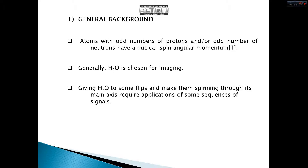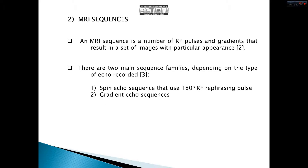Let's talk about the theory behind MRI. Atoms with odd numbers of protons and odd numbers of neutrons have a nuclear spin of angular momentum. This feature provides us with detecting such atoms by applying spatial signals that excite spin angular momentum. Generally, H2O is chosen for imaging. However, some other atoms may be chosen, but this is not a common decision due to some disadvantages. In order to give some flip angles to H2O, we should make them spin through the main axis, and this requires some spatial sequences.